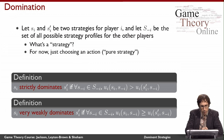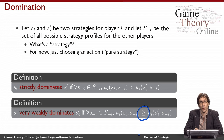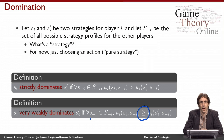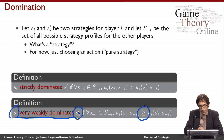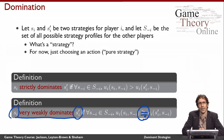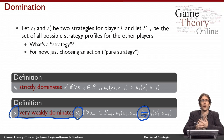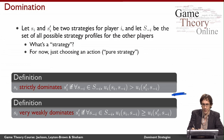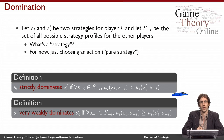We also have another notion of dominance called very weak dominance. It's almost the same definition — the only difference is that we use a weak inequality instead of a strict inequality. This means that no matter what everybody else does, I'm always at least as happy playing si as playing si-prime. We call it 'very weak' because this condition even allows for equality: even if si and si-prime always give exactly the same utility, we're still allowed to say si dominates si-prime.